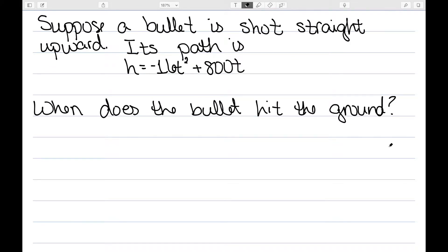Let's suppose a bullet is shot straight upward, and we know its path is given by h equals minus 16t squared plus 800t. In this case, t is the amount of time since we fired, and h is the height of the bullet. So when does the bullet hit the ground? Well, if it's hitting the ground, then its height is 0.